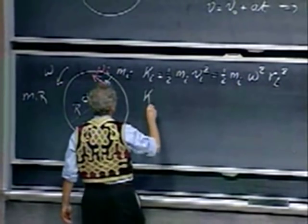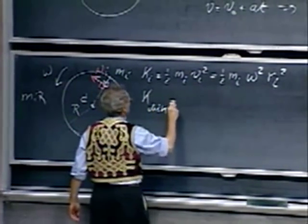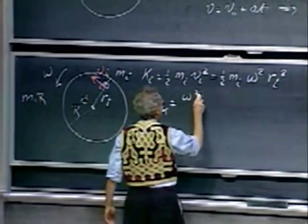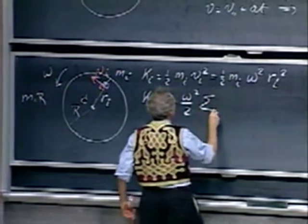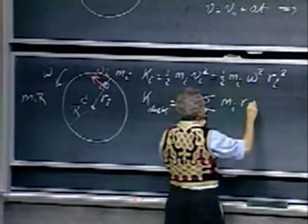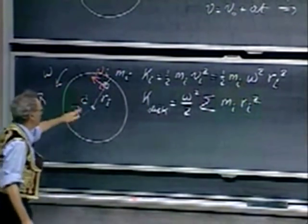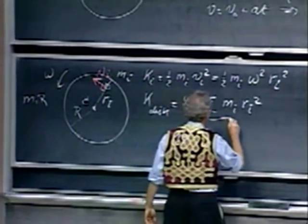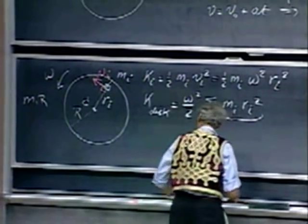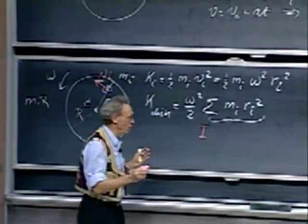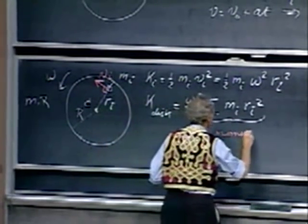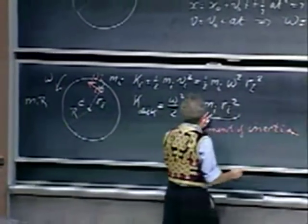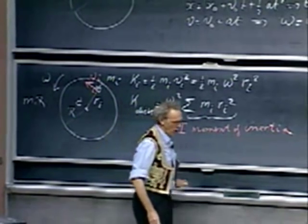What is the total kinetic energy of rotation of the entire disk? We make a summation: (omega²/2) times the sum of mᵢ·rᵢ² over all elements, each with their individual radius rᵢ. This quantity is what we call the moment of inertia I—don't confuse it with impulse. The moment of inertia is I = Σmᵢrᵢ².